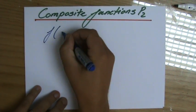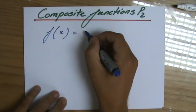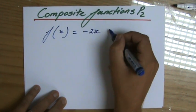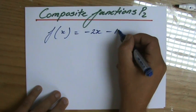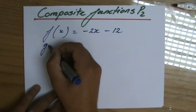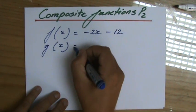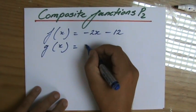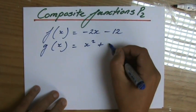We have, for instance, the function f(x) equals minus 2x minus 12, and another function g(x), and that one is x squared plus 5.